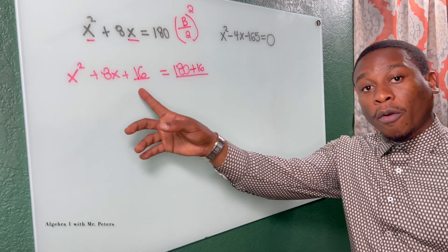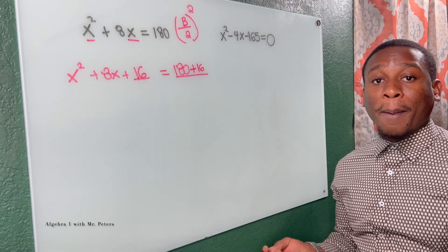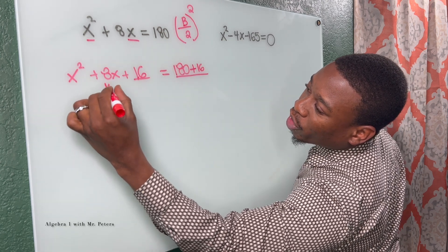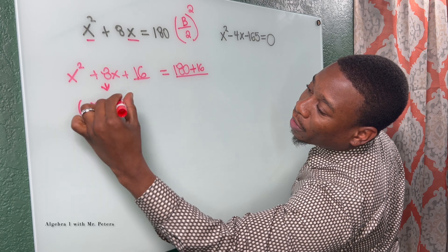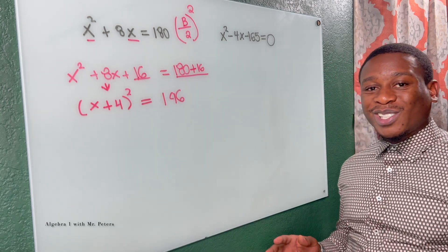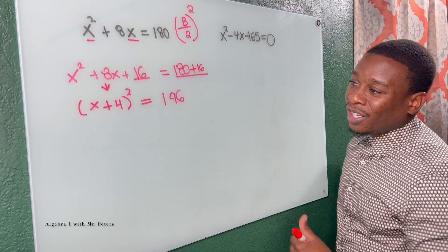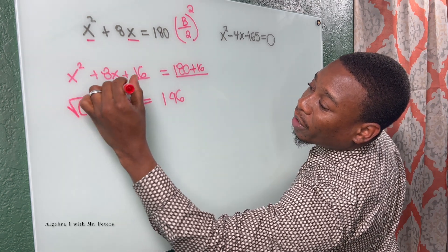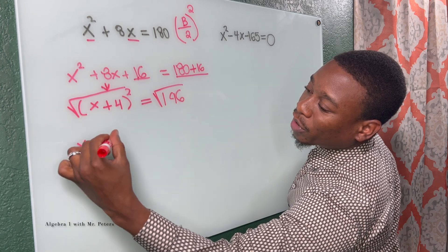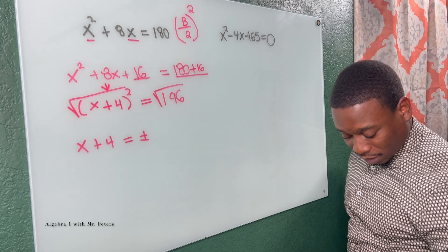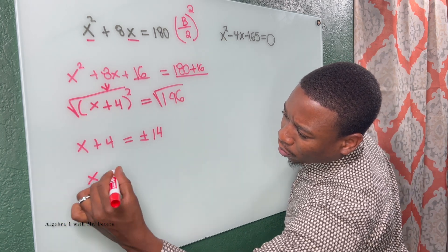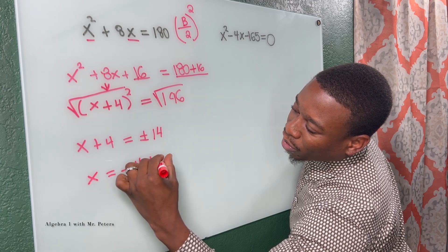Now at this step, we created a perfect square trinomial. Now we're gonna simplify and break it down to its binomial. Just take your B and divide it by two. So we know this trinomial comes from squaring X plus four, and this is equal to 196. Now at this step of completing the square, this is when the square root method factors back in. To get rid of this exponent so we could solve for X, we're gonna take the square root on both sides. We're left with X plus four is equal to plus or minus the square root of 196, which is 14.